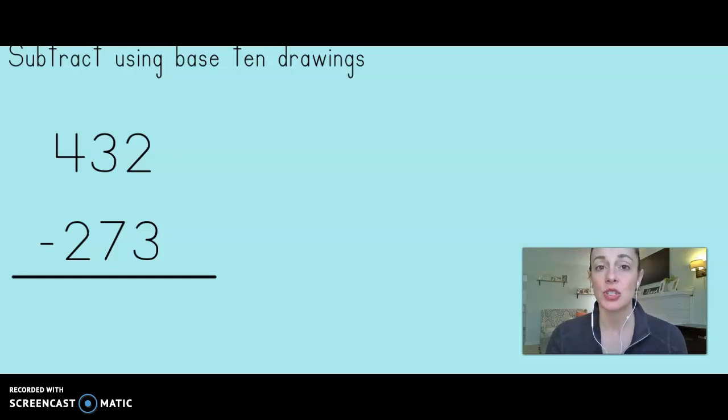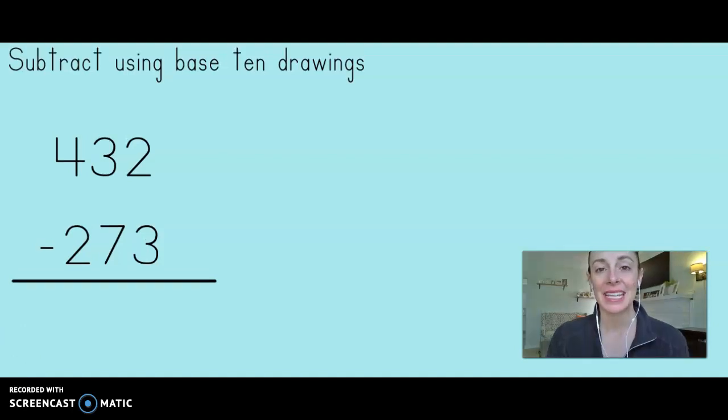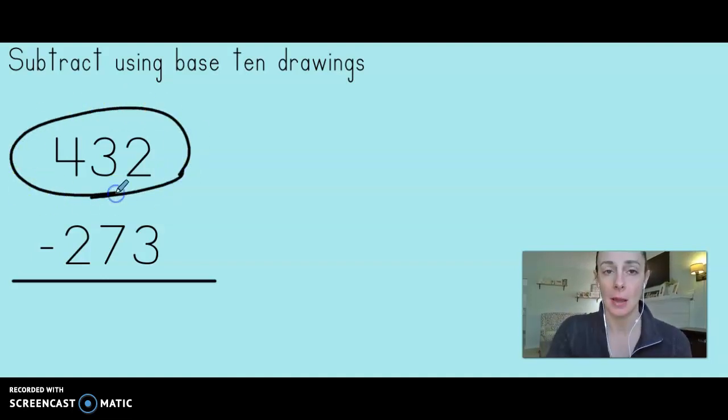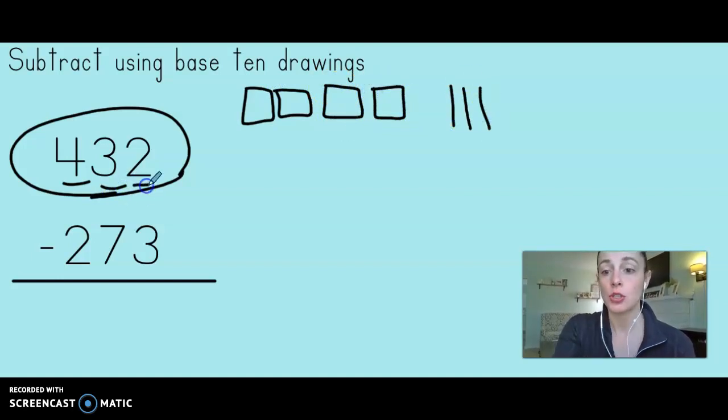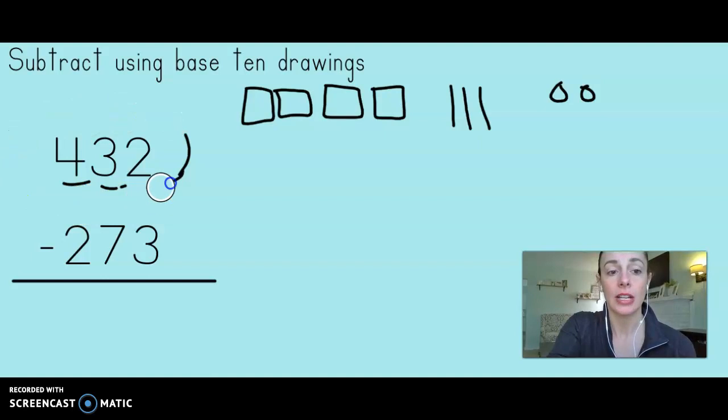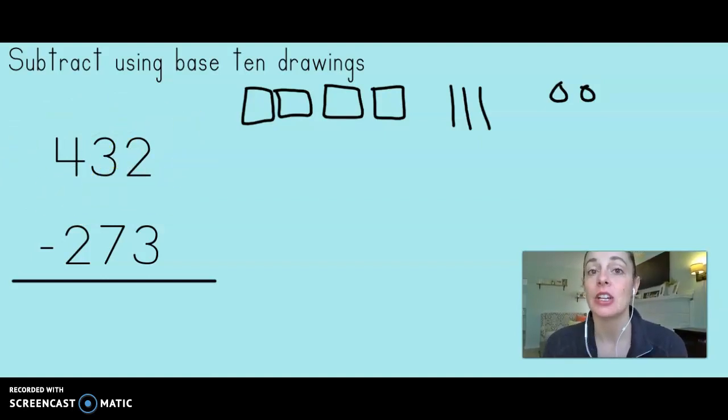432 minus 273. To get us started with this drawing problem, the first thing that we need to do is draw the top number. If you remember when we add we draw both numbers, but in subtraction we only need to draw the top number which is the bigger number. Let's draw it using our ones, tens, and hundreds. So we have 432.